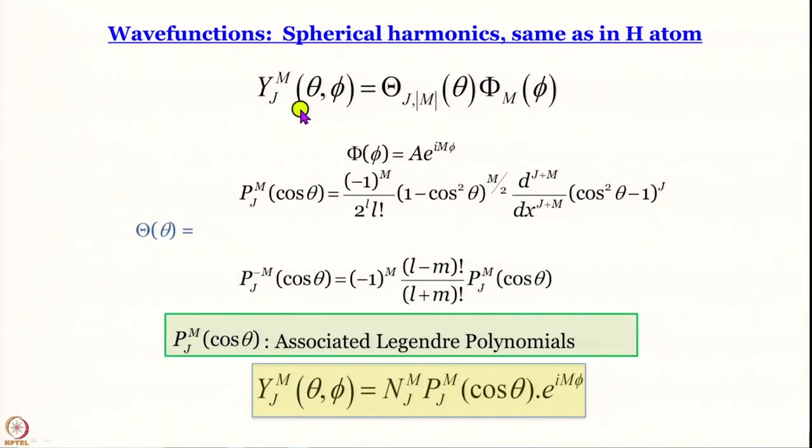For the rigid rotor, we have discussed how one can set up the Schrödinger equation starting from the square of the angular momentum operator. We have worked out the phi-dependent part and given the answer for the theta-dependent part. The wave function is essentially the spherical harmonics Ψ(θ,φ), equal to the theta-dependent part multiplied by the phi-dependent part. Now we can talk about what J and M are.